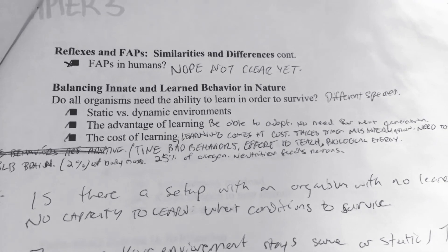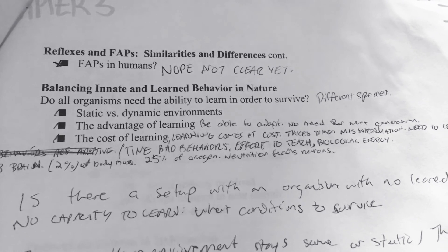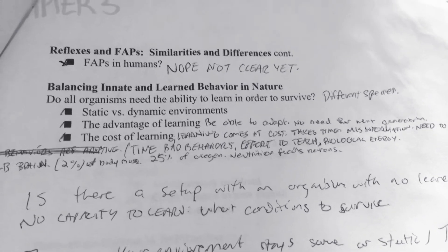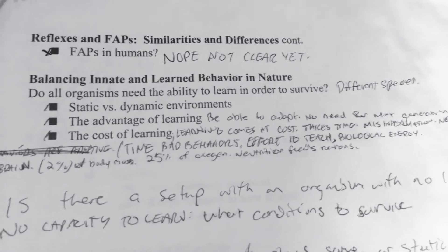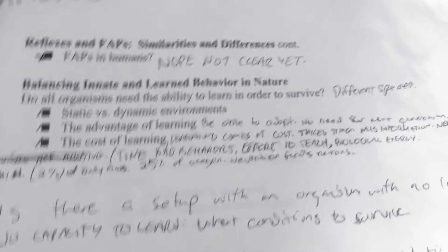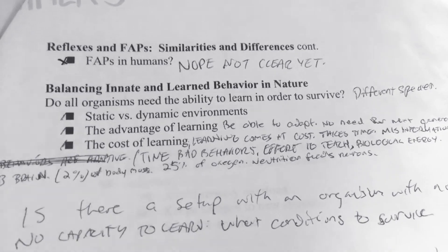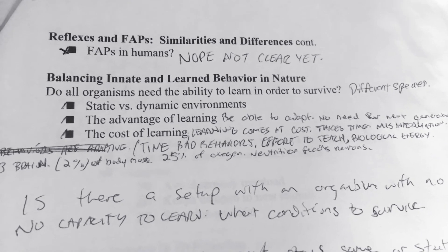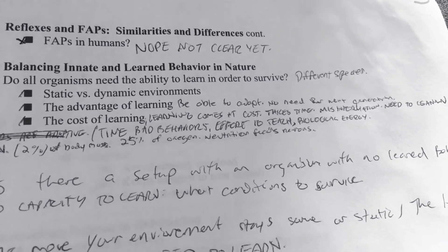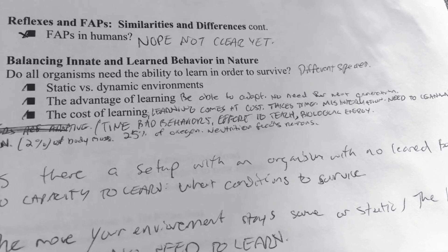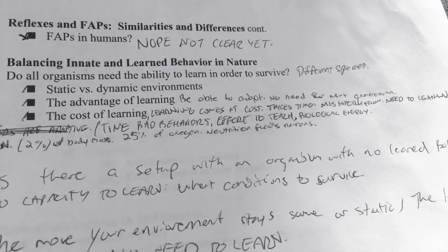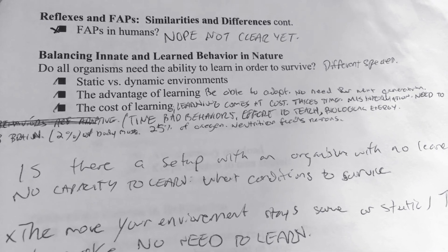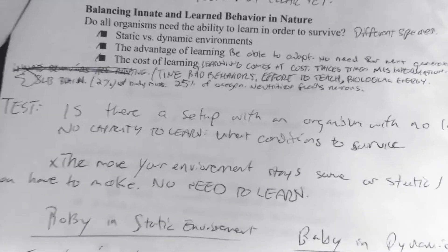Balancing innate and learned behaviors: do all organisms need the ability to learn in order to survive? It depends on the species. Some species in more dynamic environments have useful fixed action patterns, while some animals in static environments don't need a dynamic range of responses. The advantage of a learning behavior is the ability to adapt — the next generation doesn't need to rediscover things because they already have the ability to learn.